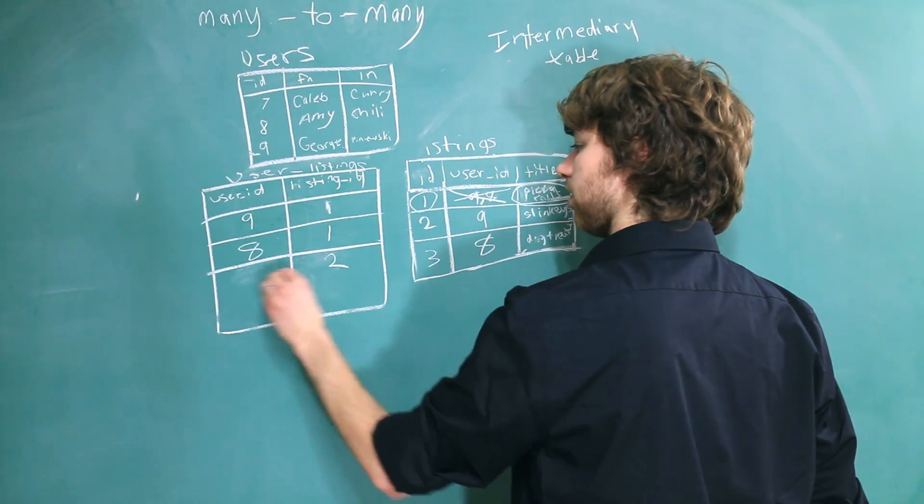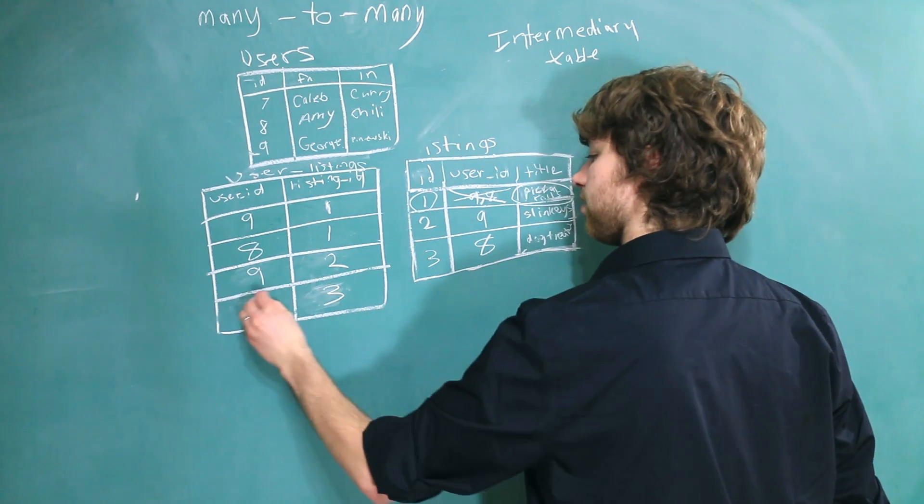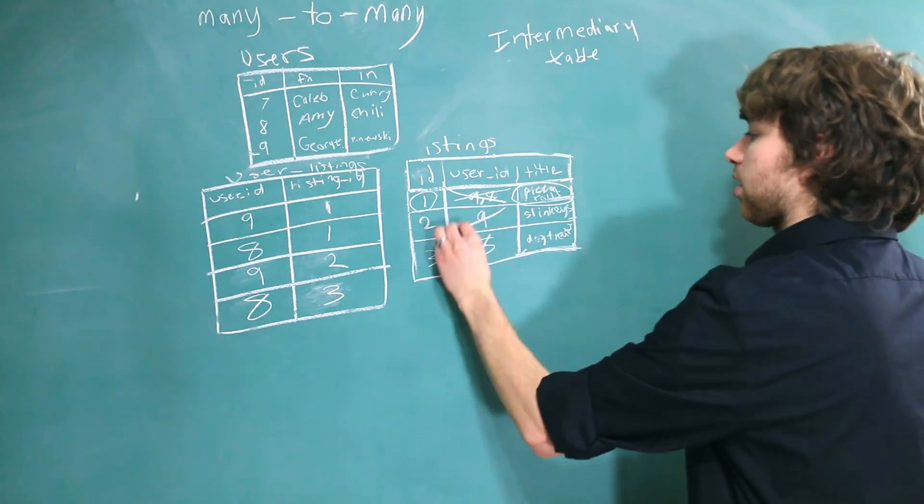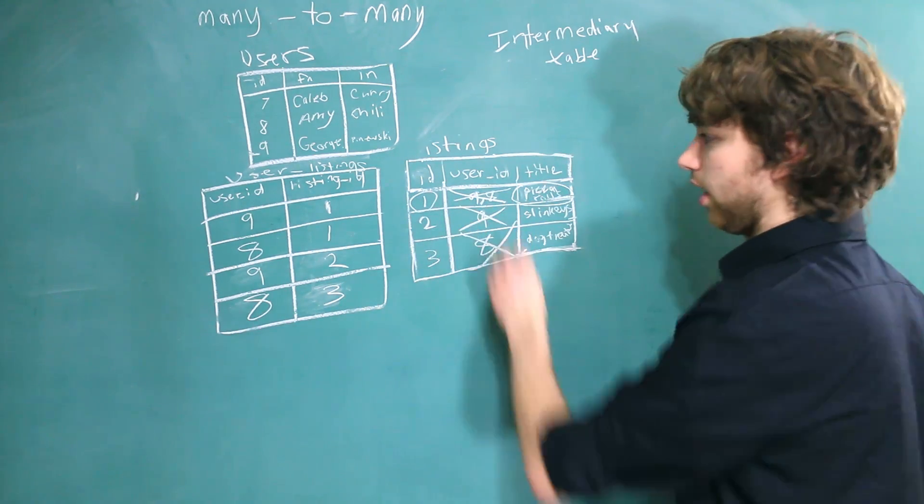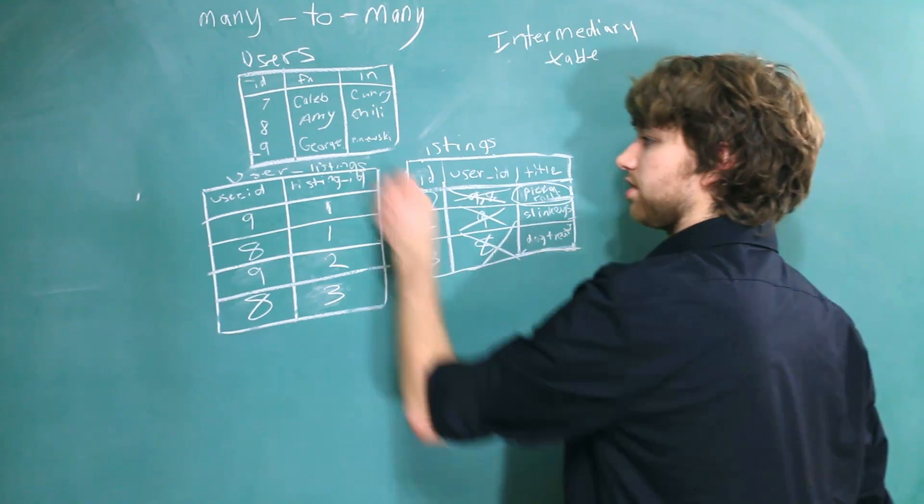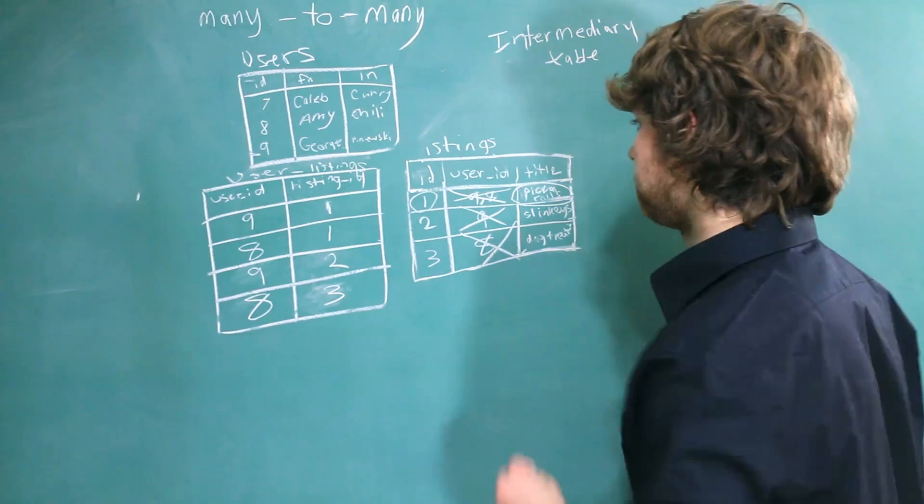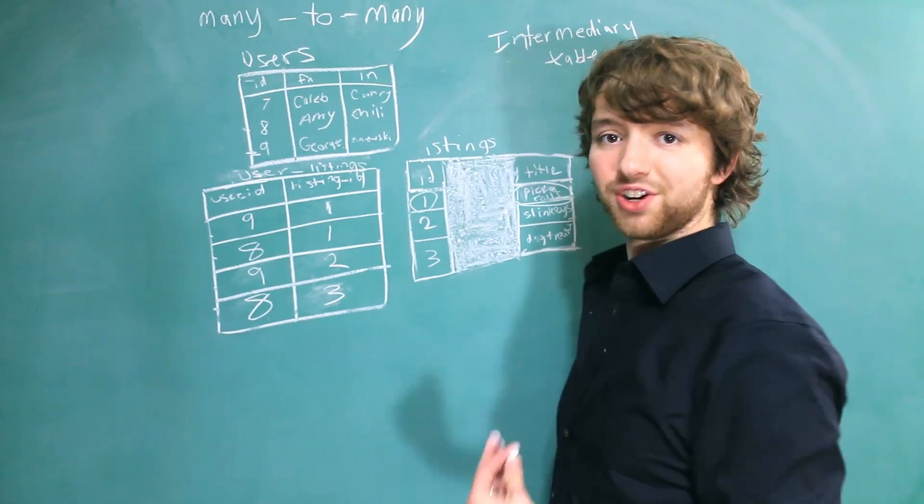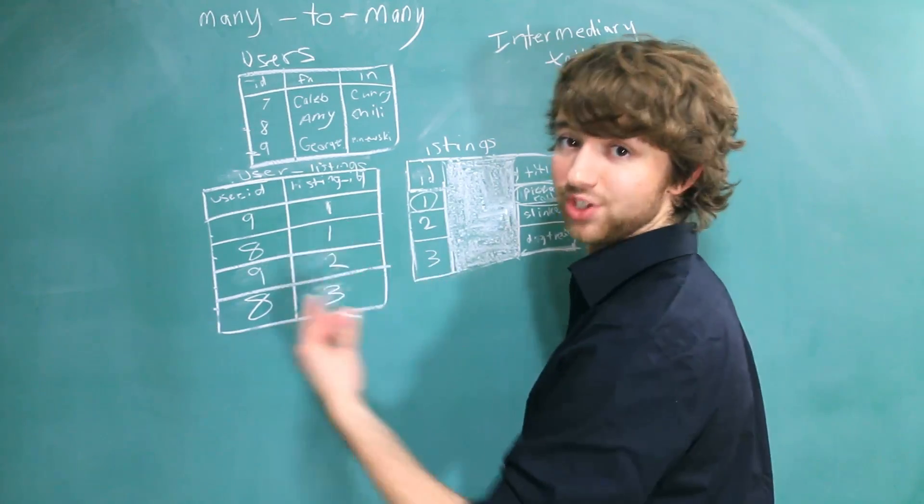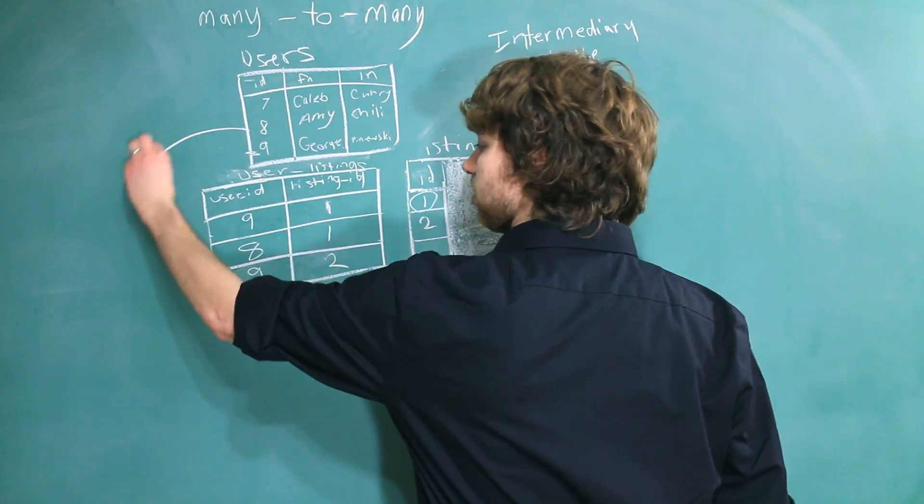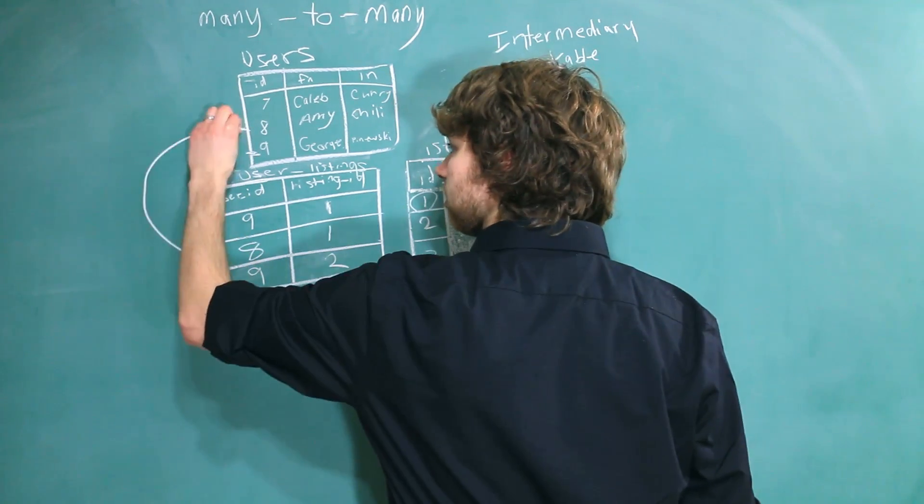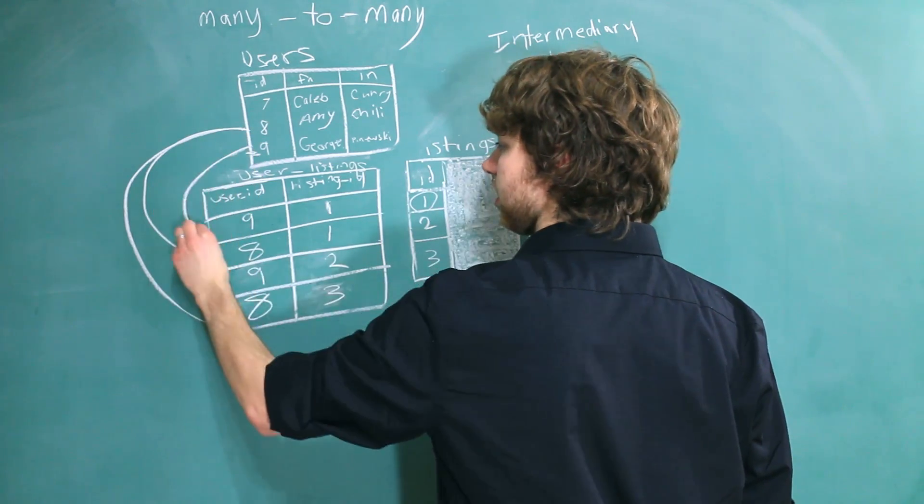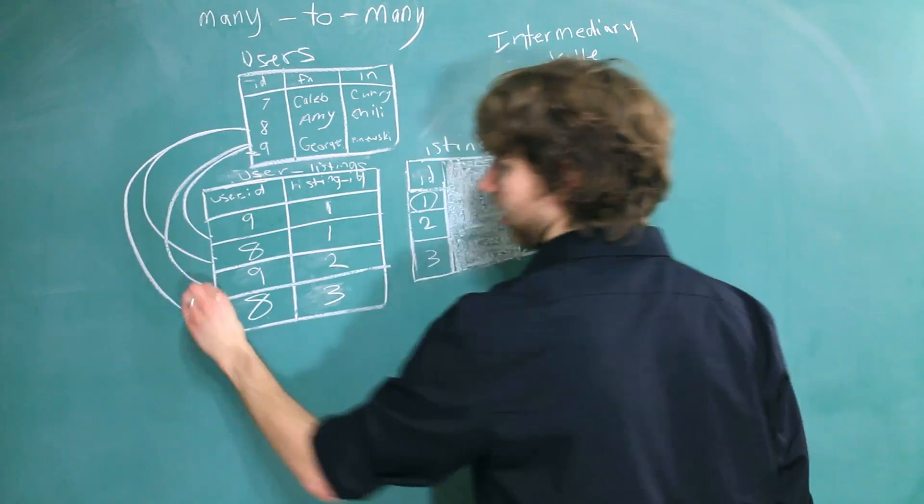So that means in this table we can just get rid of this and then let's add another row. We'll have 2, user 9, 3, and user 8. As you can see we're not going to need to store the user in here anymore because all of that information is found in the user listings table. So we can just get rid of this entire column. Now let's draw lines just to show how these are connected and that will help us visualize this. So 8 goes to 8, and to 8, and then 9 goes to 9, and 9.